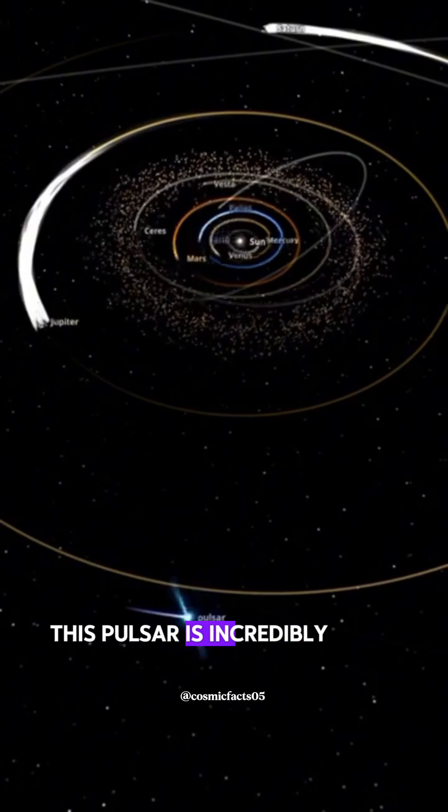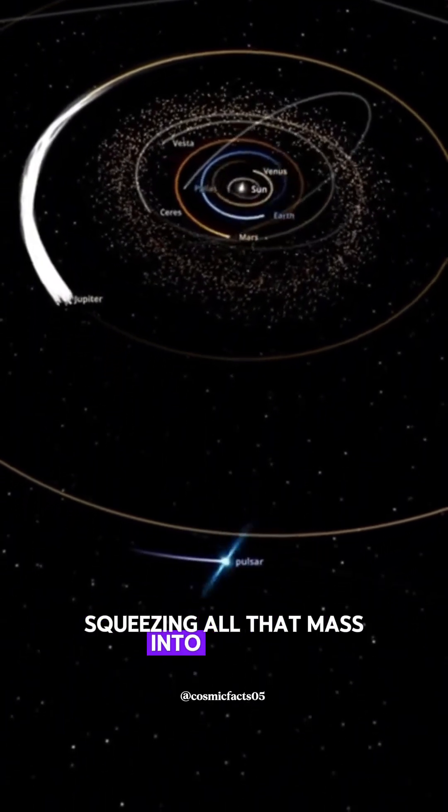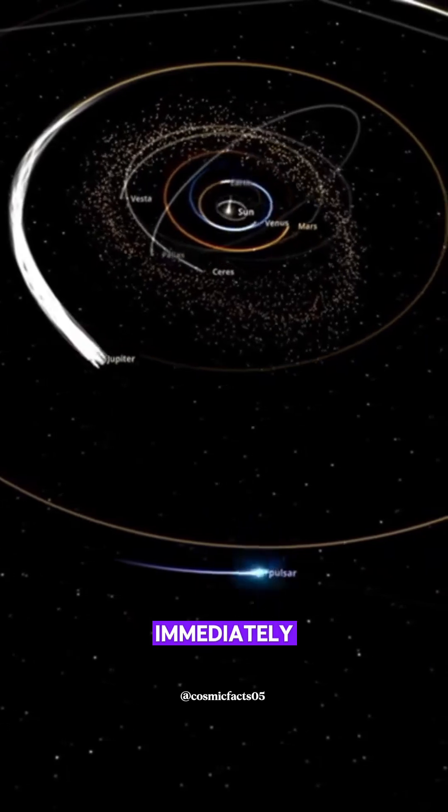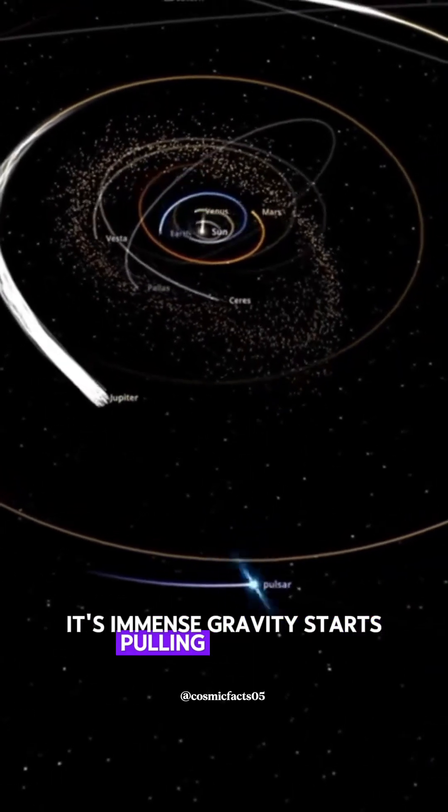This pulsar is incredibly dense, squeezing all that mass into a sphere only about 3 miles across. Immediately, its immense gravity starts pulling on the sun.